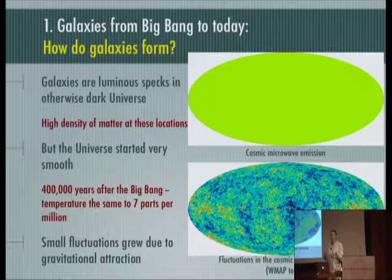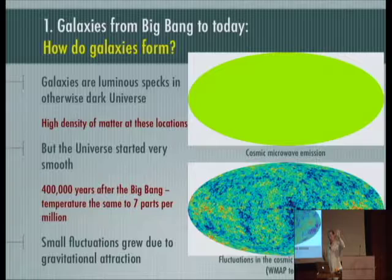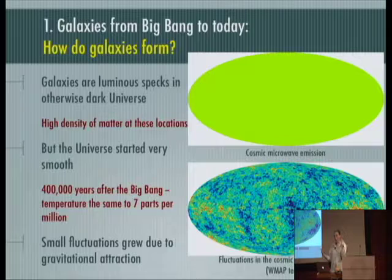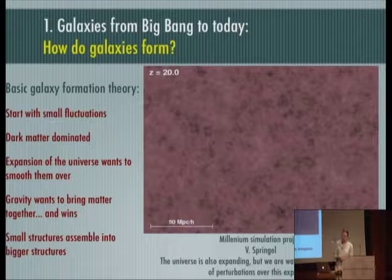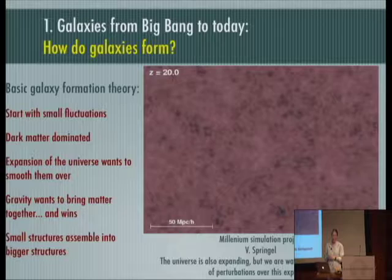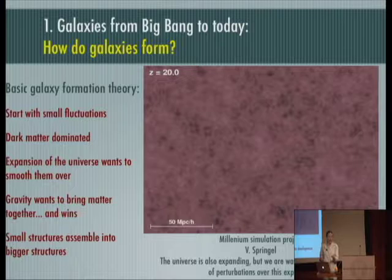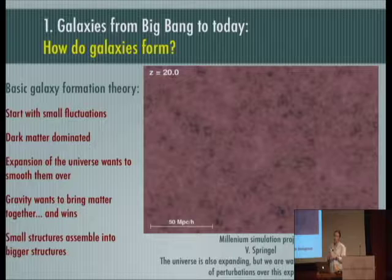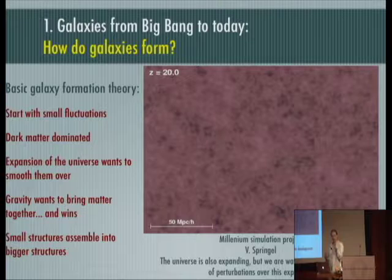Shortly after the Big Bang the universe is very smooth with just a little bit of density fluctuations — some parts slightly more dense, others slightly underdense. Then a lot of time elapses and gravity is doing work on those fluctuations all the time. Gravity wants to collapse the overdensities and empty out the underdensities. All of these considerations are put together in what is now the basic galaxy formation theory. We can actually ignore the normal matter and consider a universe completely dominated by dark matter. It turns out that gravity wins and small structures assemble into bigger and bigger structures.